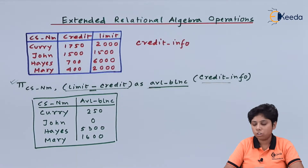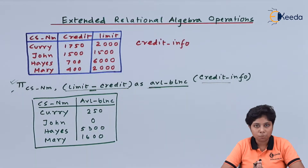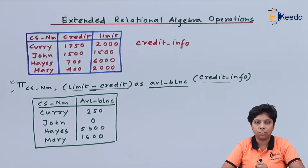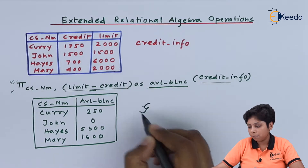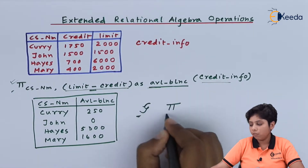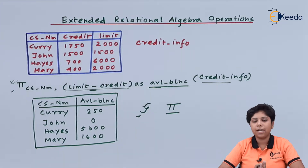The resultant relation is the operation result of the generalized projection. To enhance this further, we can add grouping. Grouping can be done with the generalized projection. We mention on which field grouping is to be done before the generalized projection. From now on we will use the capitalized G with a subscript (curve notation) to represent the generalized projection, instead of the Greek capital letter pi.